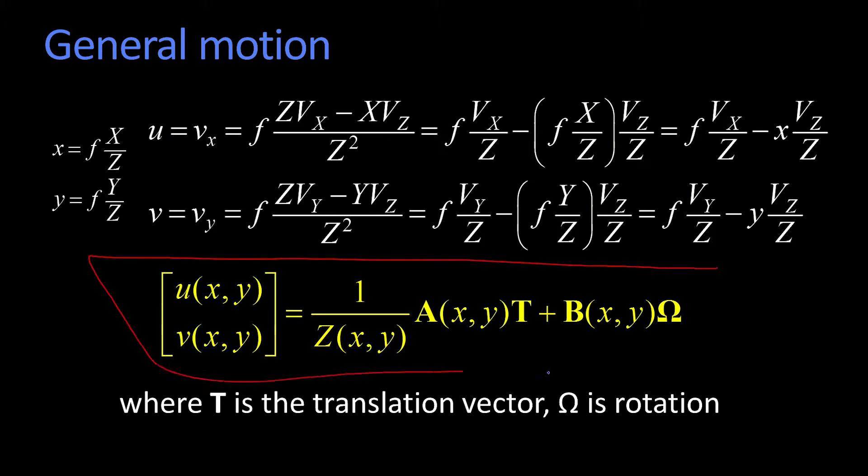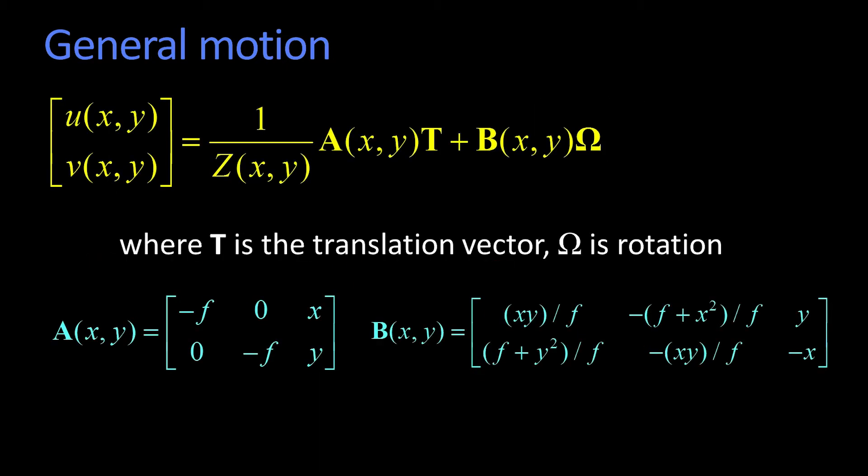In this very simple formula here: one over z at some point xy, times A times T, plus B(xy) of omega. Let me show you exactly what that is.